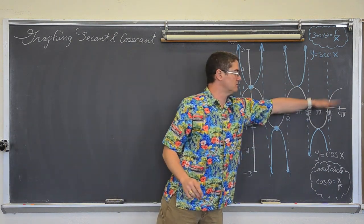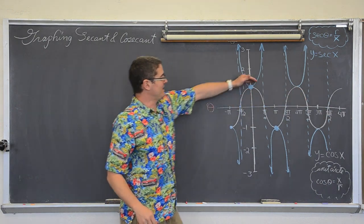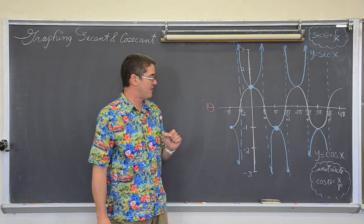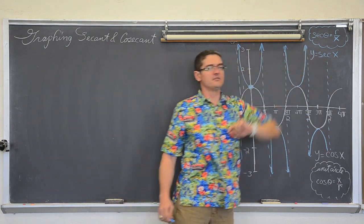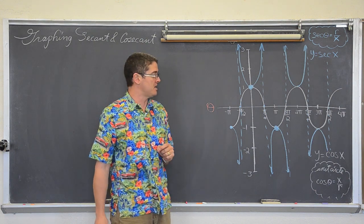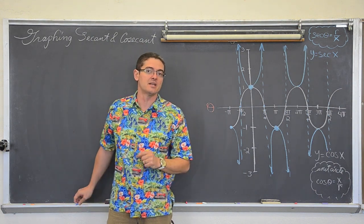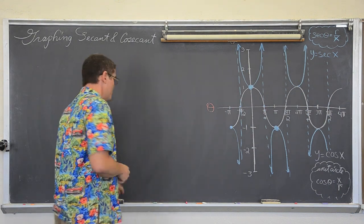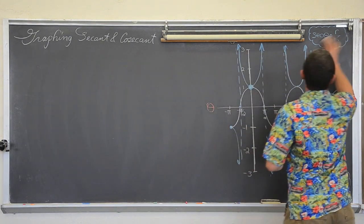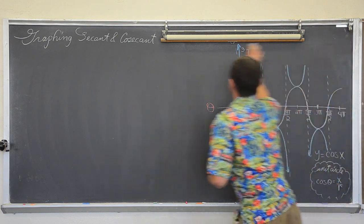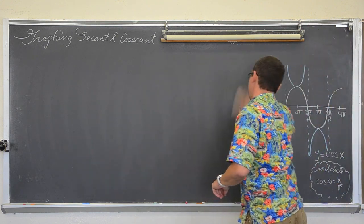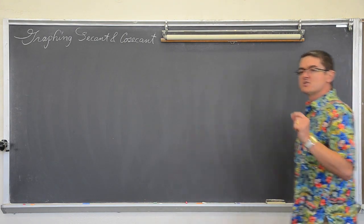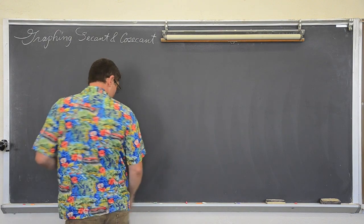The cosine graph acts as a guide to help us graph y equals secant of x. The same applies to sine as a guide for cosecant. When graphing using t-tables, whether it is sine, cosine, secant, or cosecant, the rule is the same: start at the phase shift and count by one quarter of the period.